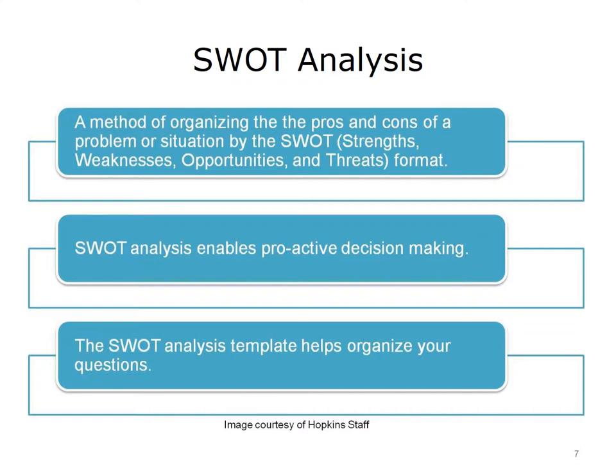In a SWOT analysis template, each letter — the S, the W, the O, and the T — are placed in one cell of a four-cell grid. Generally, each cell contains a series of questions that have been predetermined to help organize thinking and assessment. Some examples of these questions or aspects that are frequently assessed in a SWOT can be seen on the next slide.